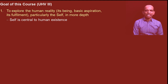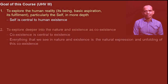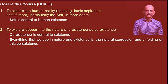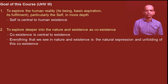So in earlier courses, you had seen that a human being is the existence of self and body. Now we'll go deeper to understand the self and see how the self is central to human existence. Next, we'll go to understand nature and existence. We had discussed that nature is there in four orders and the whole of nature is submerged in space — this is termed as coexistence. Now we'll see how coexistence is central to existence.